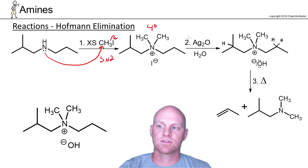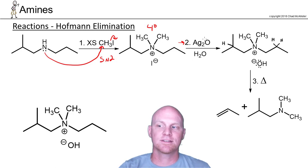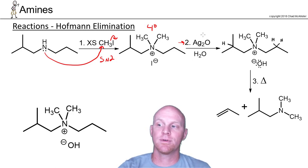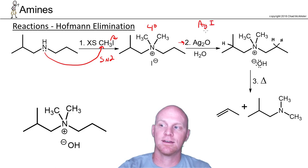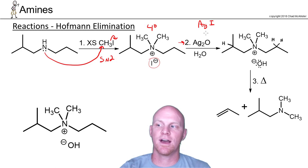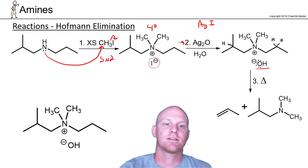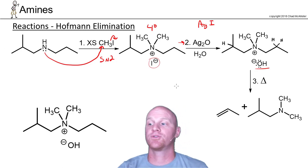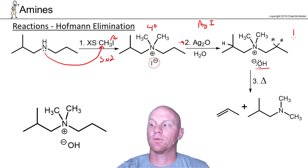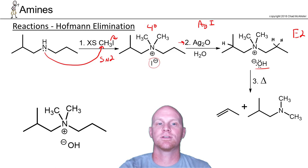The next thing we're going to do is add silver oxide and water. Silver oxide is basic, and the fact that it's silver means we can precipitate out the silver iodide. So the iodide ion gets precipitated out as silver iodide and gets replaced with hydroxide — a strong base. That's the key here because hydroxide being a strong base means we can now do E2 elimination.